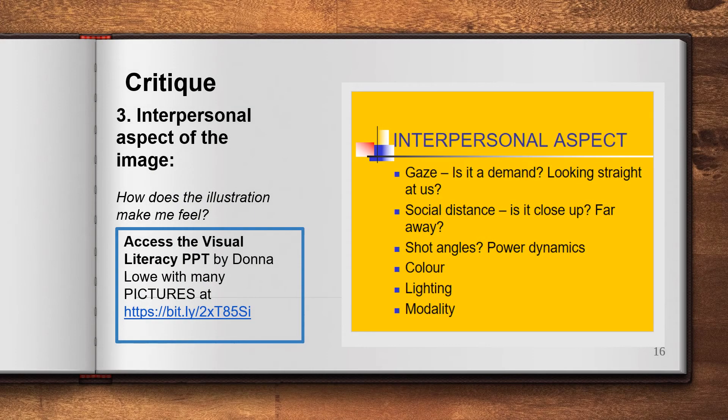Another aspect about an image is how it makes us feel. There are some elements to consider here, such as social distance, shot angles, colour, lighting, and modality. You can learn a lot from the Donna Lowe PowerPoint so that when you give opinions about images, you can give your reasons for why you feel that way.